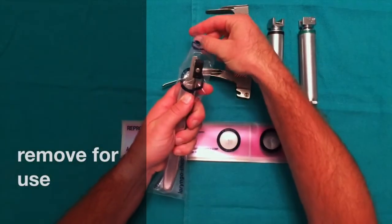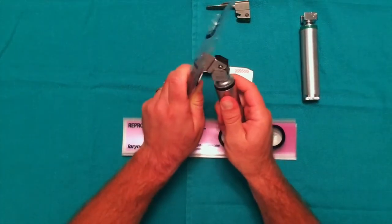If you intend to use your blade right away, remove the flap before attaching your handle. This will allow for quick and easy removal of the laryngoscope sheath.